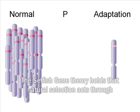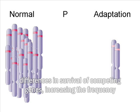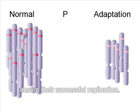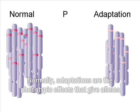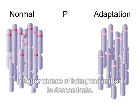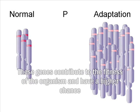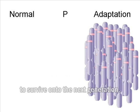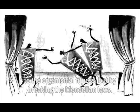The selfish gene theory holds that natural selection acts through differences in survival of competing genes, increasing the frequency of those alleles whose phenotypic effects ensure their successful replication. Normally, adaptations are the phenotypic effects that give alleles a better chance of being transmitted to descendants. These genes contribute to the fitness of the organism and have a higher chance to survive unto the next generation. But some genes gain their advantage not by contributing to organismal fitness, but by breaking the Mendelian laws.